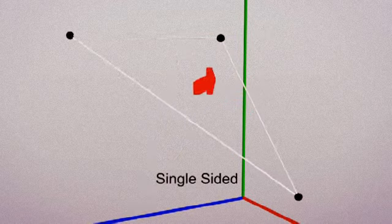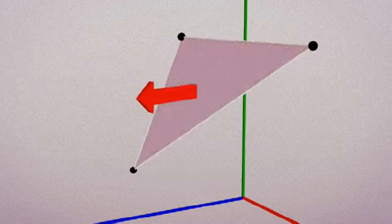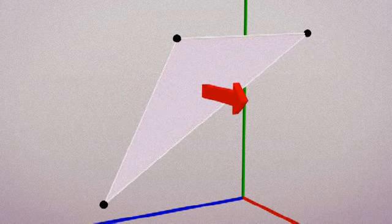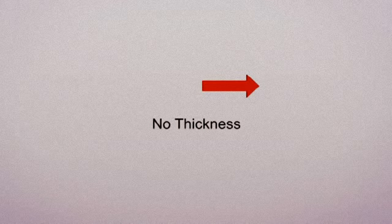A polygon can be single-sided or double-sided. If it's single-sided, it's invisible from behind. Polygons are infinitely flat. If you look at a polygon from the side, it's invisible because it has no thickness.